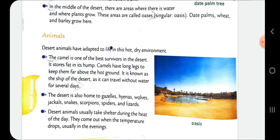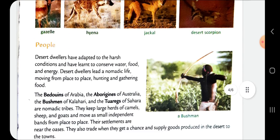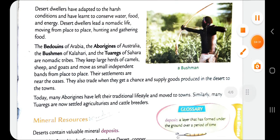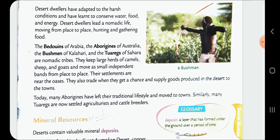Then question number 5: Name the nomadic tribes that live in the desert. Which are the nomadic tribes that live in the desert? That is given in the record page here, and also in the textbook page number 239. The Bedouins of Arabia, the Aborigines of Australia, the Bushmen of Kalahari and the Tuaregs of Sahara are nomadic tribes.